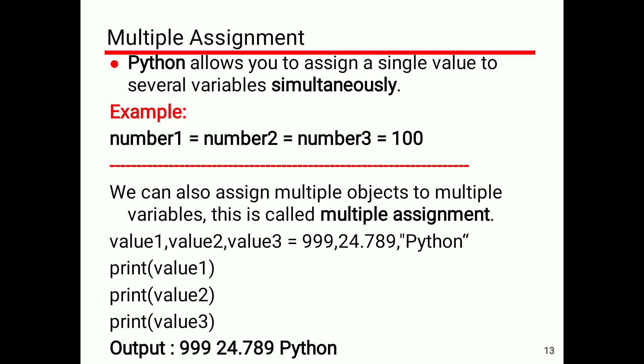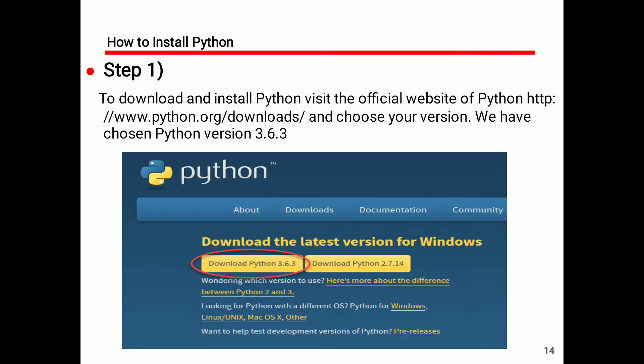We then print: print(value1), print(value2), print(value3). The output simply displays what was assigned: 999, 24.789, Python.